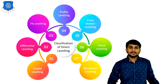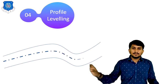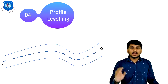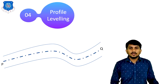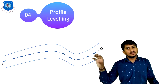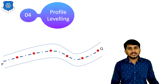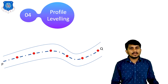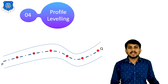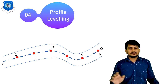Now let us move to the fourth type of leveling, which is profile leveling. Suppose there is a road having starting point P and ending point Q; we have to prepare the profile of the road. For that, a number of points are marked onto the road. In profile leveling, all the points are marked along the line of the road — points 1, 2, 3, 4, 5, 6, etc. The distance between the points is equal throughout.